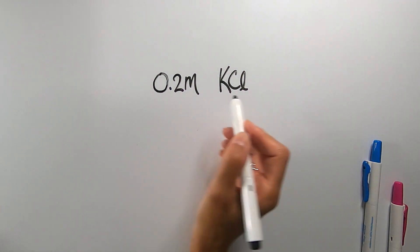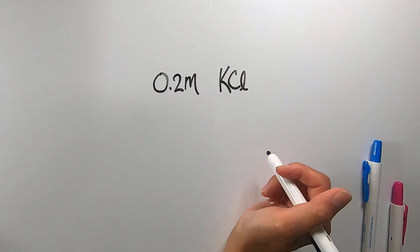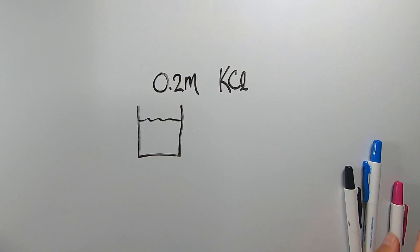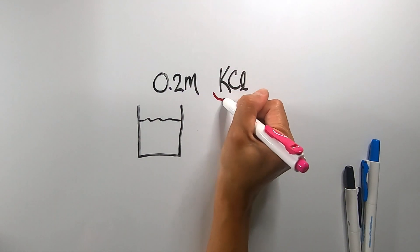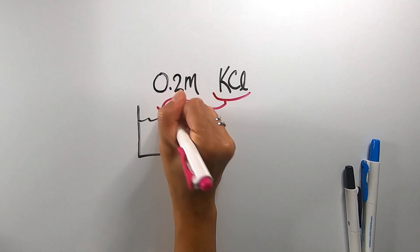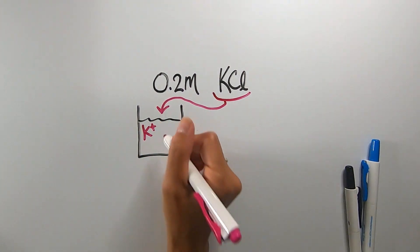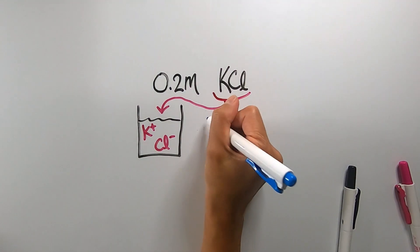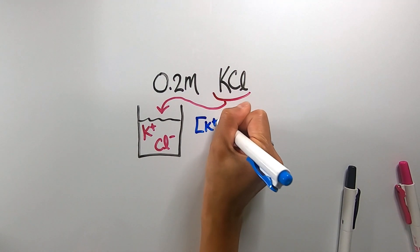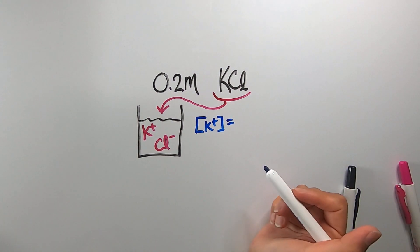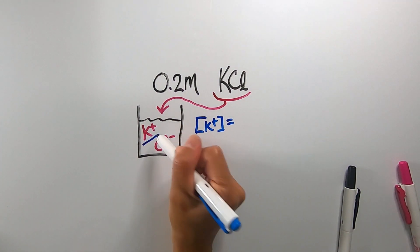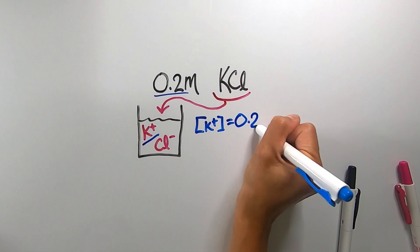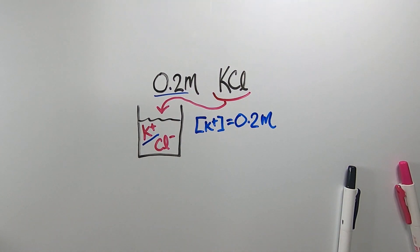Suppose I have a 0.2 molar solution of potassium chloride. First thing I'm going to do is draw my beaker, fill it with water, and then I'm going to take one molecule of potassium chloride and dissolve it in the water to release one potassium ion and one chloride ion. If I were asked for the molarity of potassium ion in solution, also known as the concentration of potassium ion in solution, I have one potassium ion times 0.2 molar, which is 0.2 molar potassium ion concentration in solution.